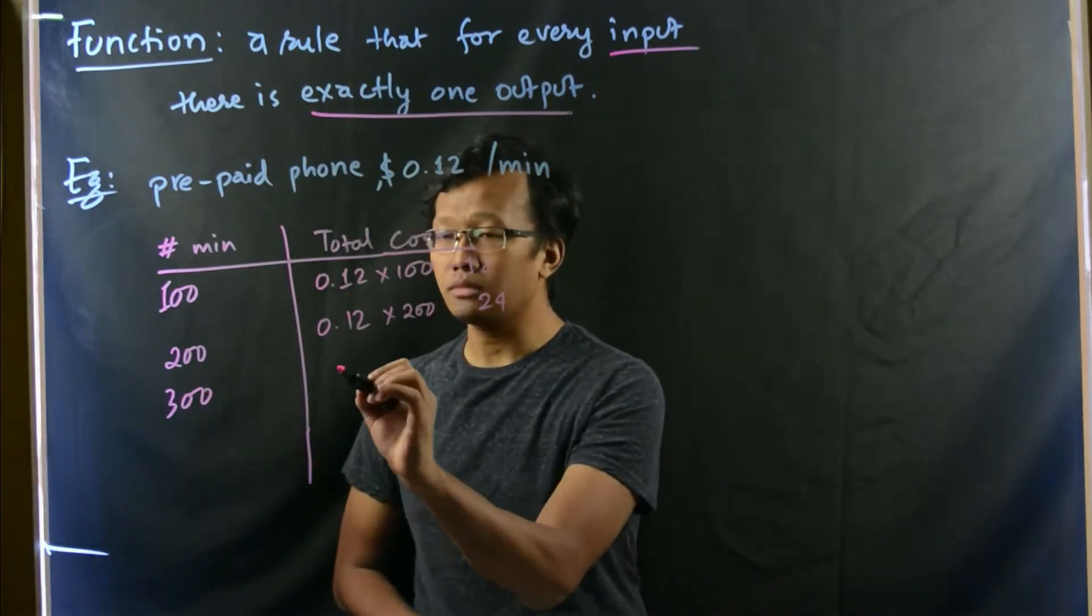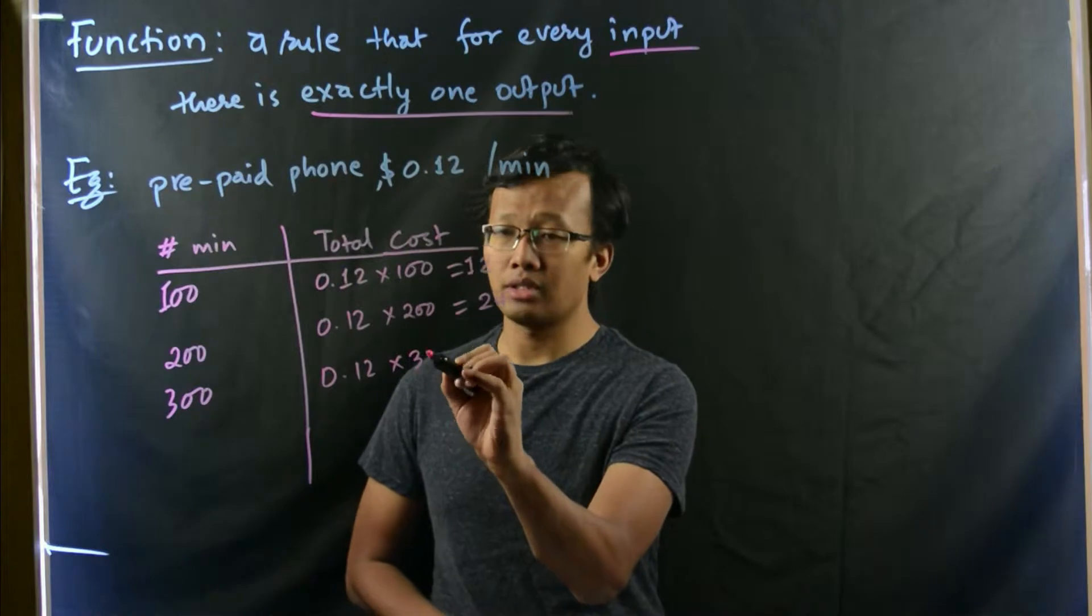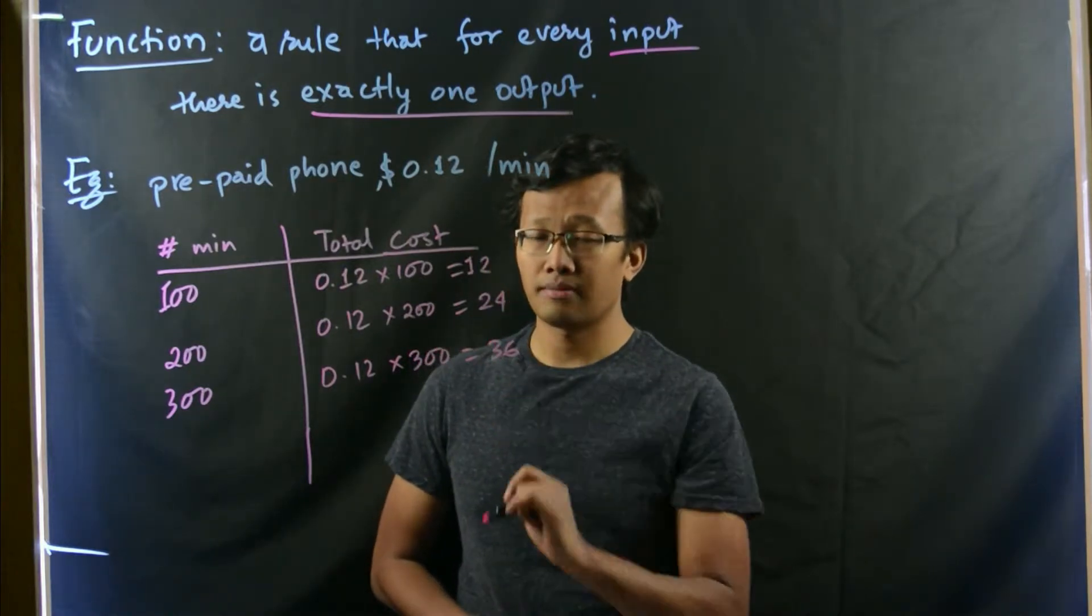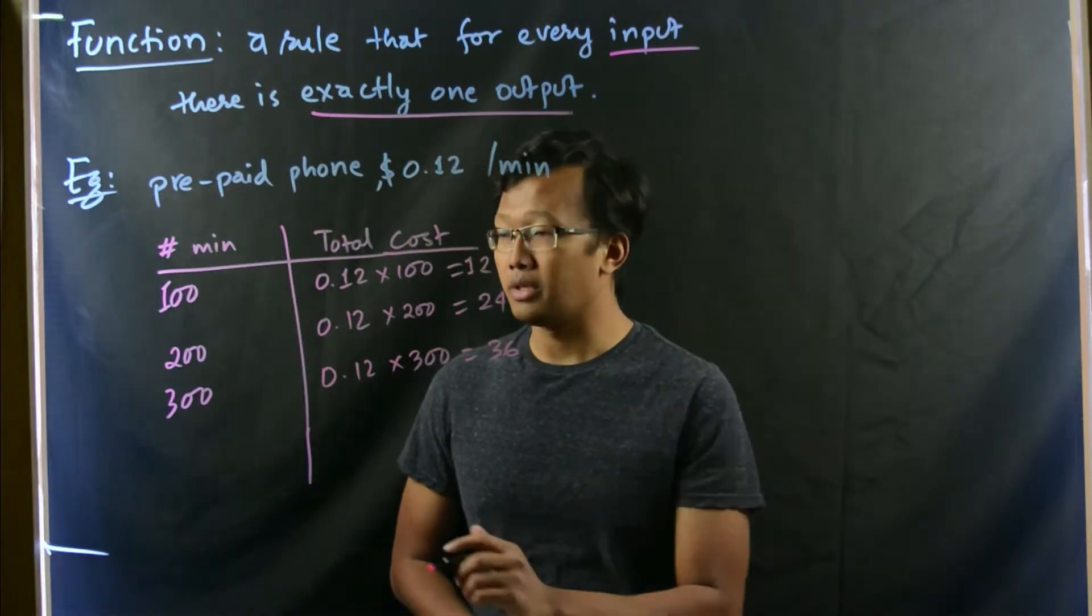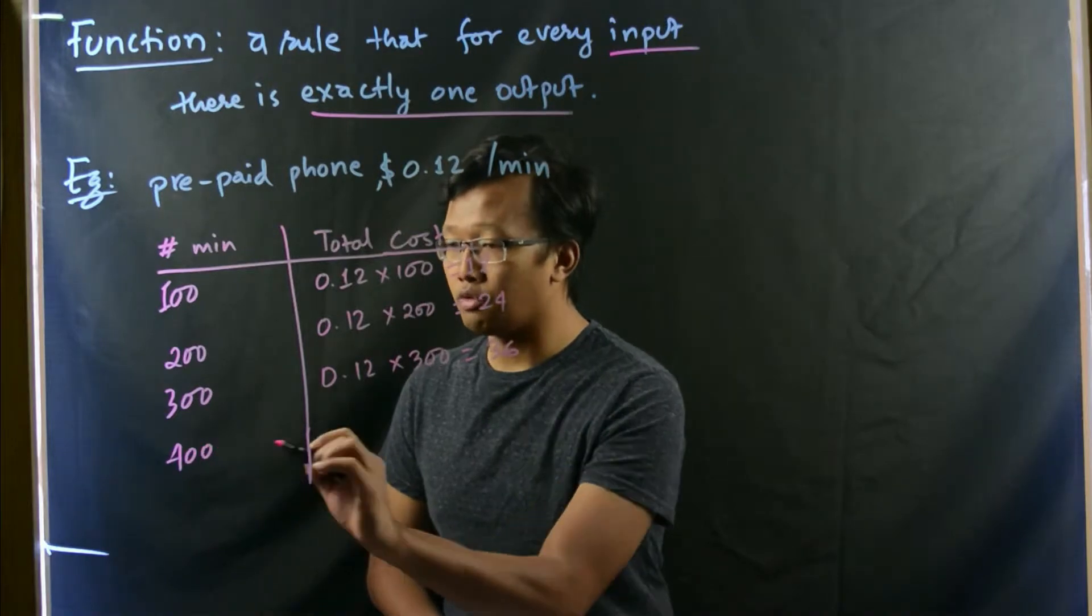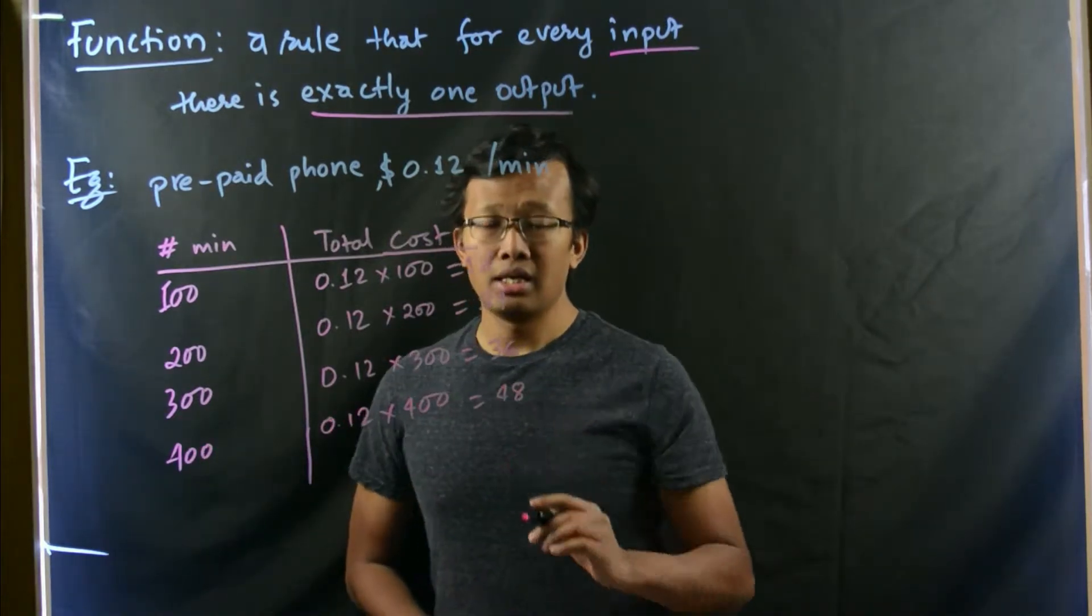And so on. 300, 0.12 times 300, so that's $36. And so on. It goes in this way. Let me just write down the fourth one.